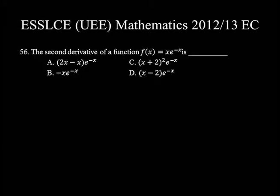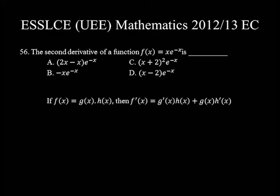Question number 56. The second derivative of a function f(x) = x · e^(−x). Then f'(x) equals the derivative of g(x) · h(x) plus g(x) · derivative of h(x), where g(x) = x and h(x) = e^(−x). So f'(x) = 1 · e^(−x) + x · (e^(−x) · (−1)) = e^(−x) − x · e^(−x).